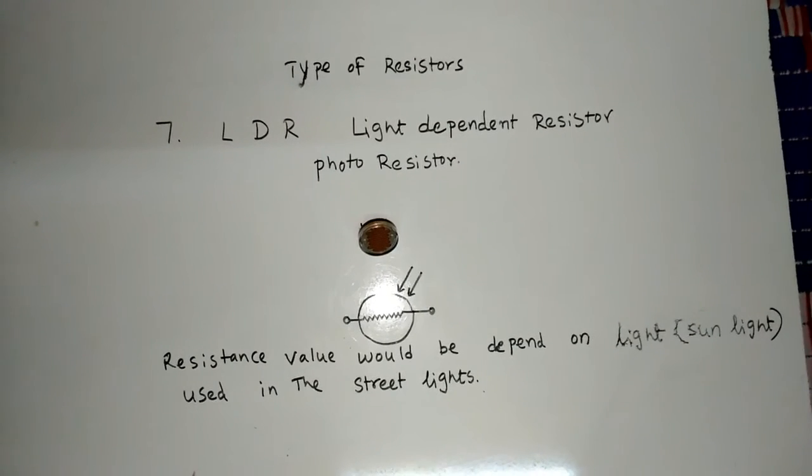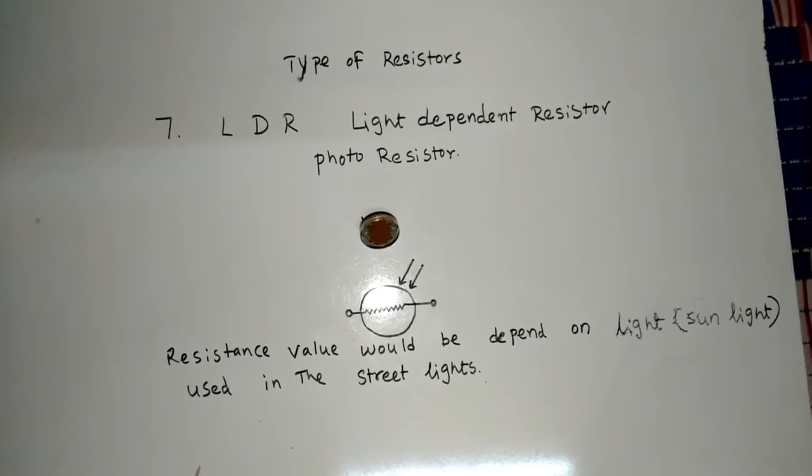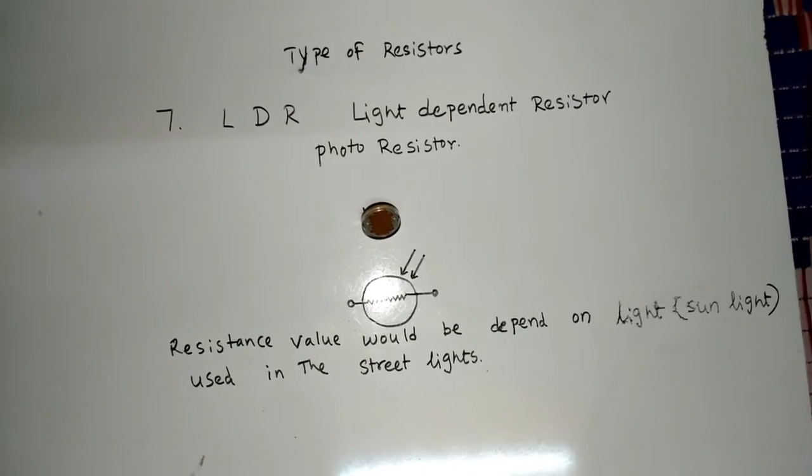Seventh: LDR or Photo Resistor. Resistance value would depend on light, used in the street lights.